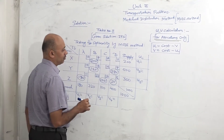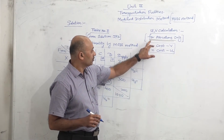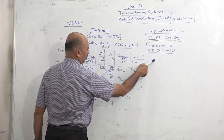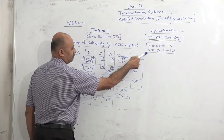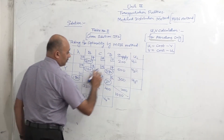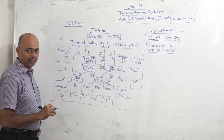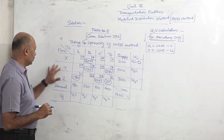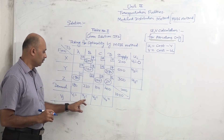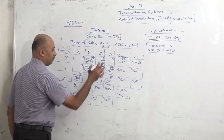Step number 1 of the Modified Distribution Method is UV calculation. It is very important to know that UV calculation is done only for allocations. This is the formula: U is equal to cost minus V, and V is equal to cost minus U. Now we will start with UV. We always assume the first value U1 as 0. There are 3 rows, so U1, U2, U3, and 4 columns, so V1, V2, V3, and V4.